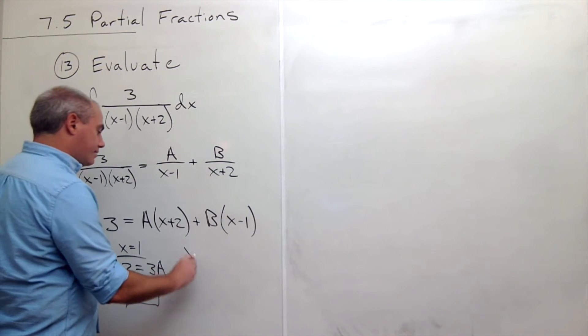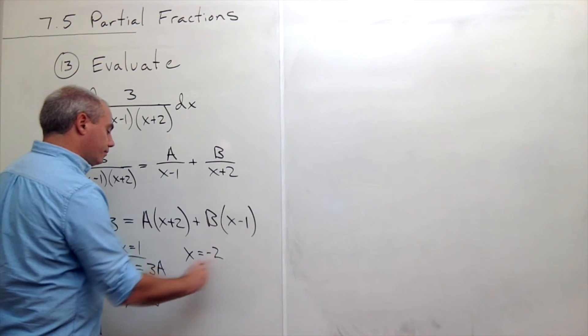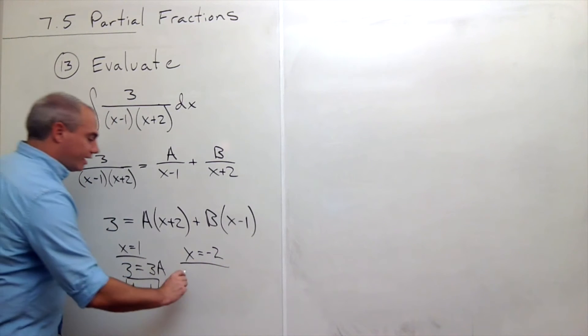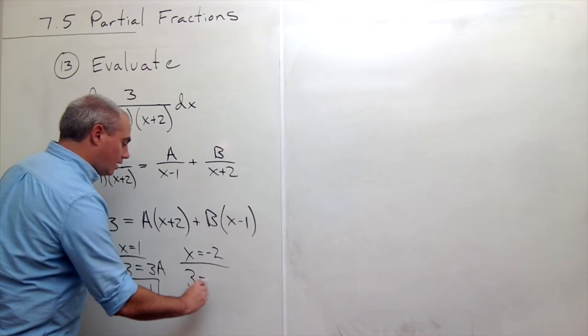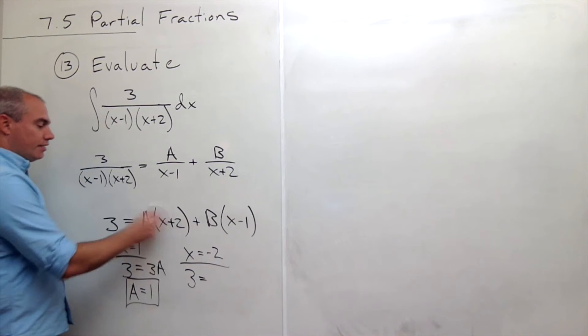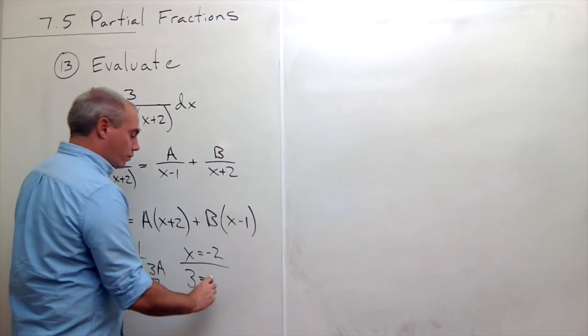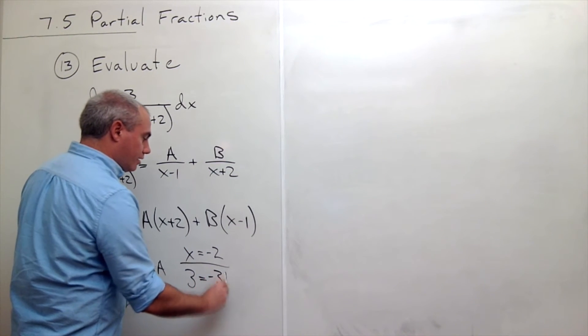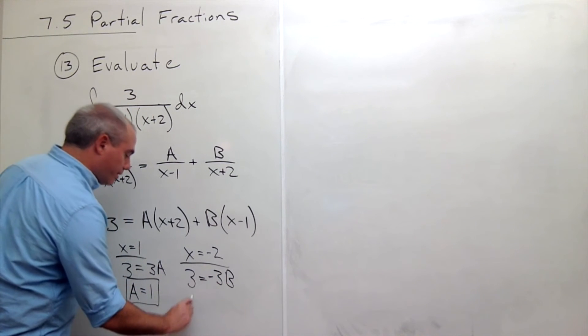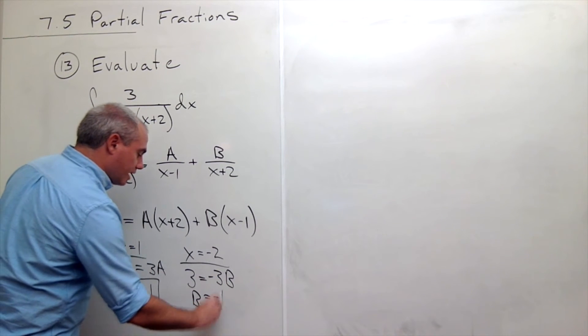Then I can let x be equal to negative 2. On the left side I get 3, and on the right side this is 0, and negative 2 minus 1 is minus 3B. So B is negative 1.